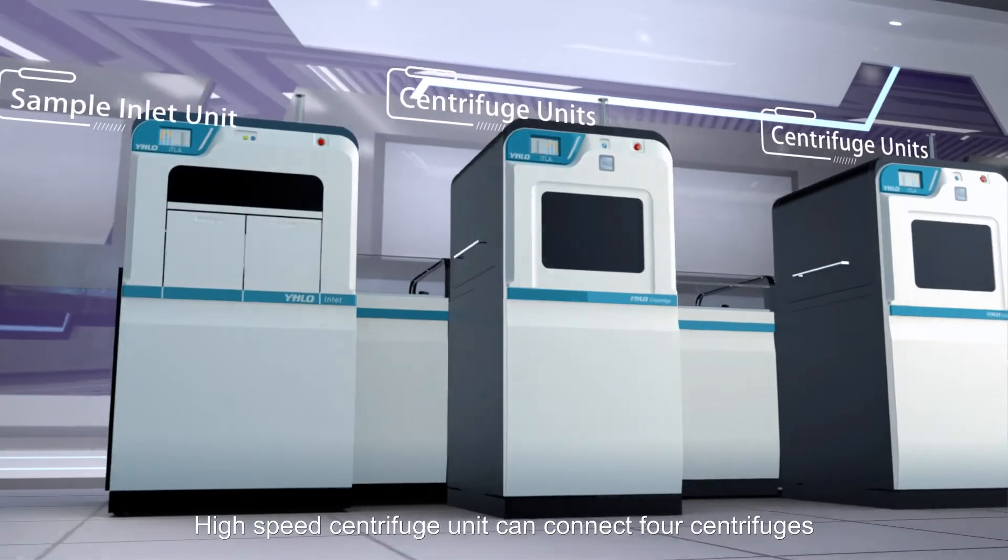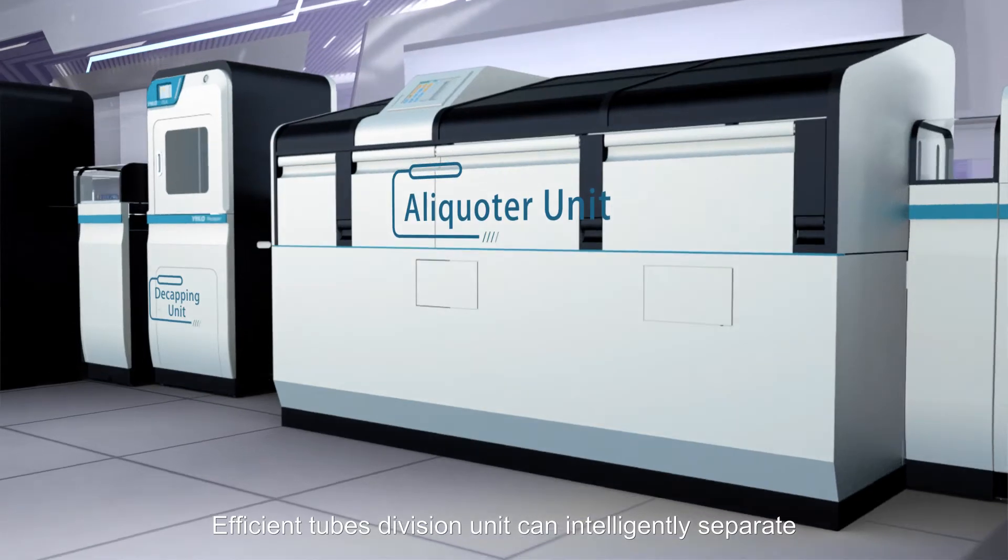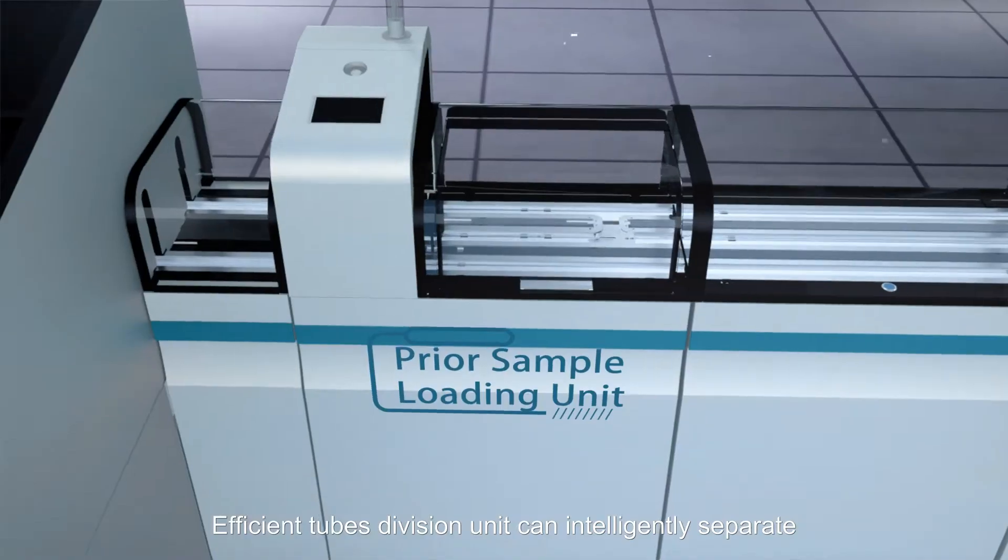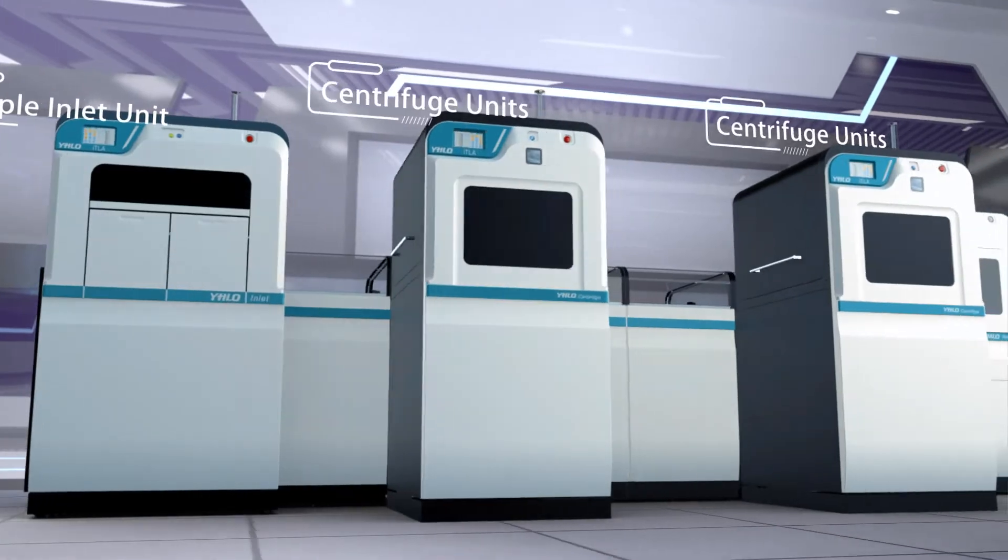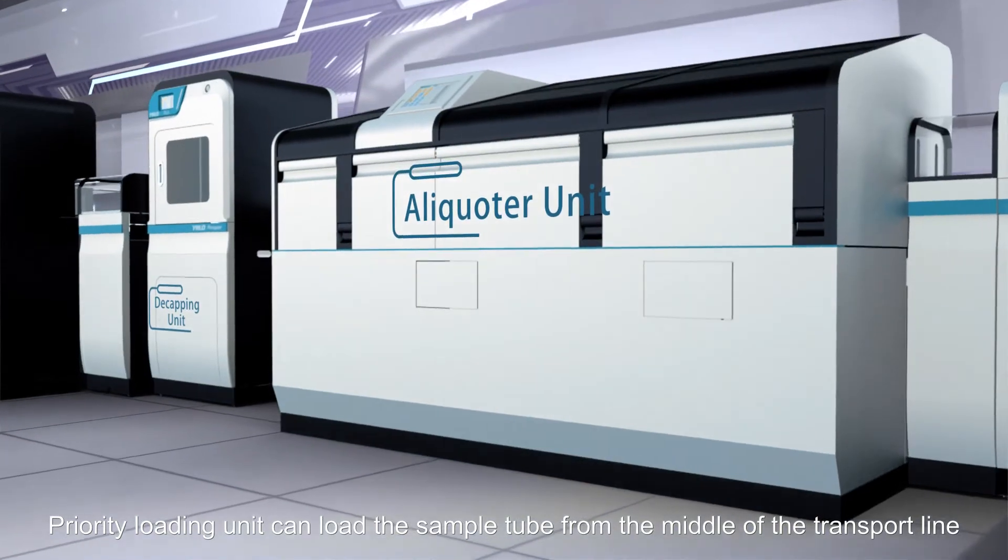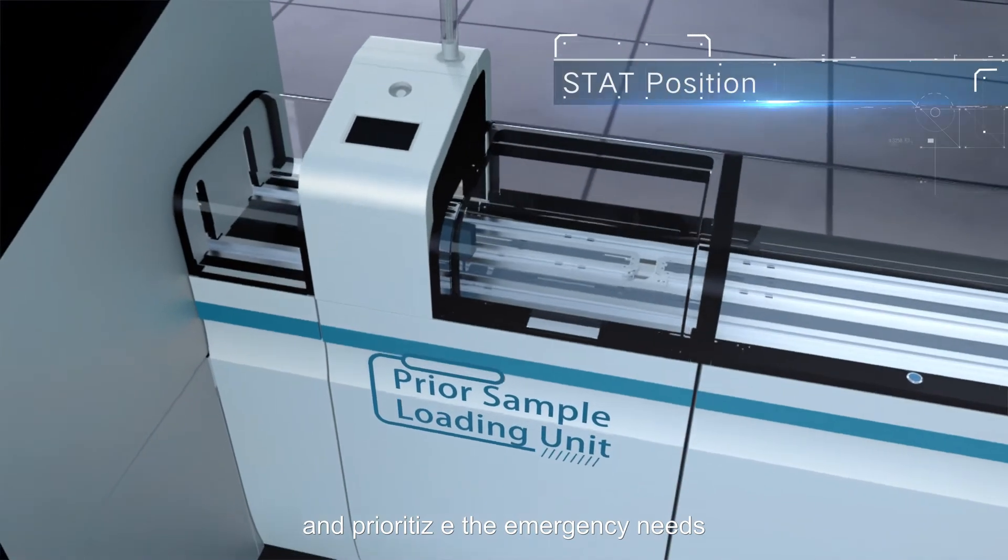High-speed centrifuge unit can connect four centrifuges. Efficient tubes division unit can intelligently separate the tubes and automatically attach barcodes. Priority loading unit can load the sample tube from the middle of the transport line and prioritize emergency needs.